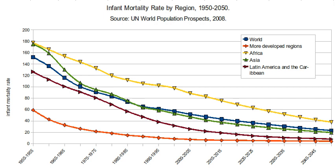Other leading causes of infant mortality are birth asphyxia, pneumonia, congenital malformations, term birth complications such as abnormal presentation of the fetus, umbilical cord prolapse, or prolonged labor, neonatal infection, diarrhea, malaria, measles, and malnutrition. One of the most common preventable causes of infant mortality is smoking during pregnancy.